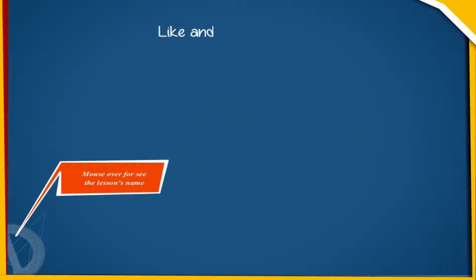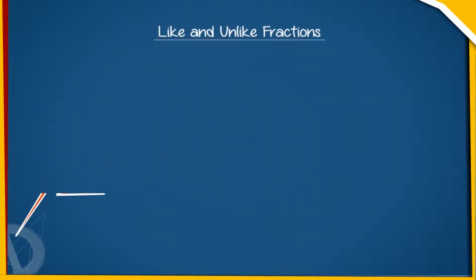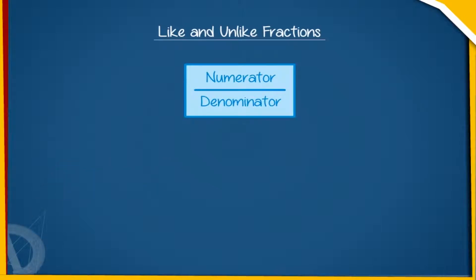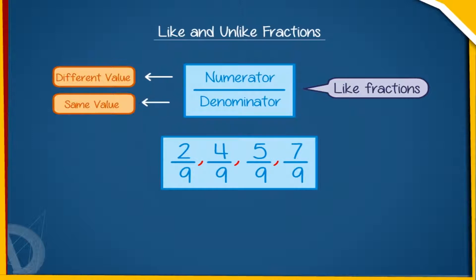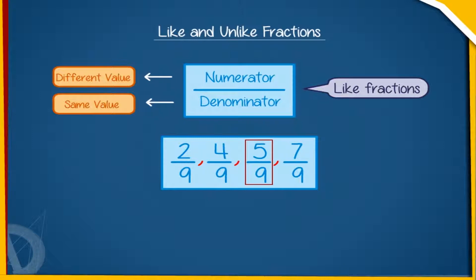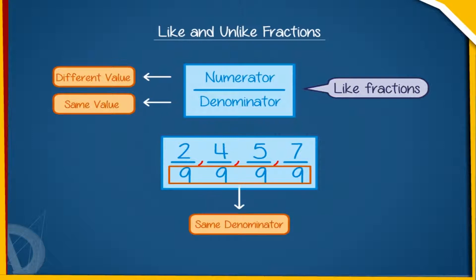Like and Unlike Fractions: When in a group of fractions, the numerators are different but the denominator is the same, the fractions are called like fractions. For example, 2 by 9, 4 by 9, 5 by 9, and 7 by 9 are like fractions because each fraction has the same denominator, that is 9.